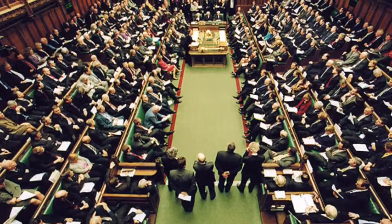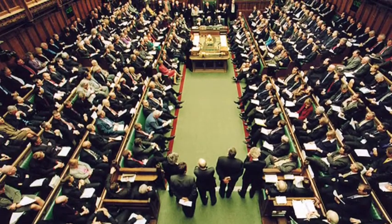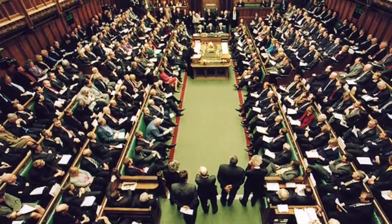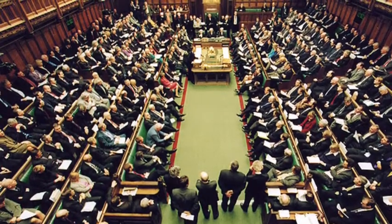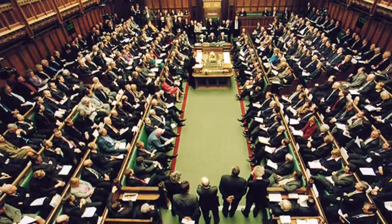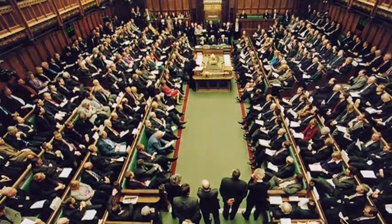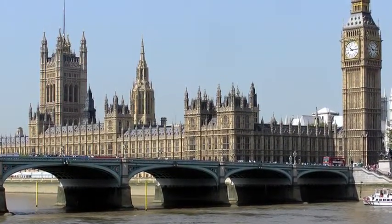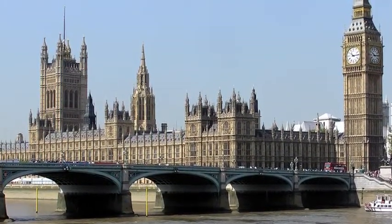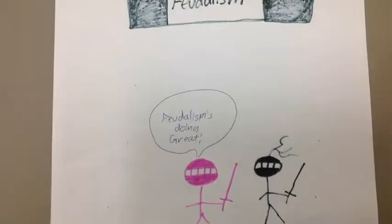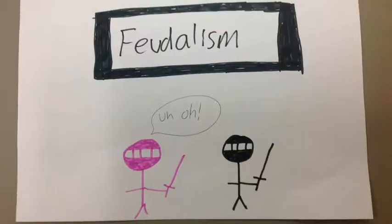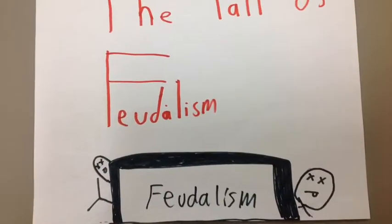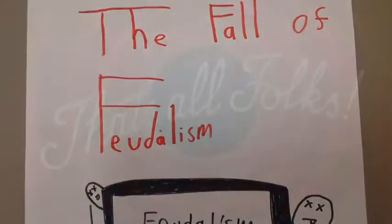The Great Council established by the Magna Carta evolved and eventually became Parliament, the legislature of Great Britain, which passes laws. All social classes were represented in Parliament, but the King and Queen still had to consult with it. These two things weakened the power of the monarch and at the same time increased the power of lower social classes, which eventually led to the fall of feudalism.